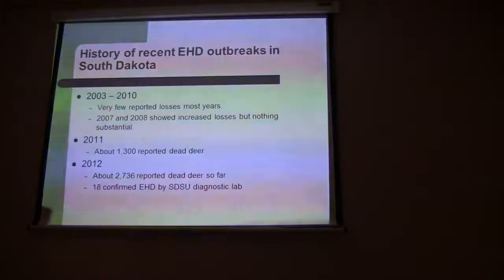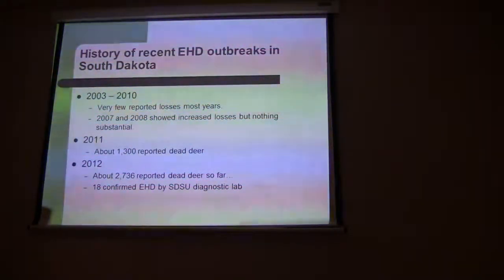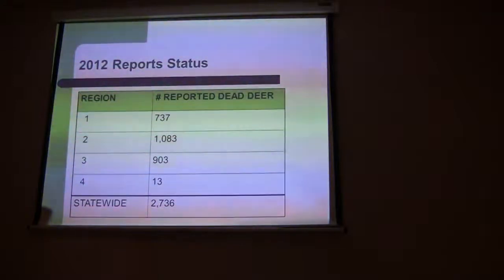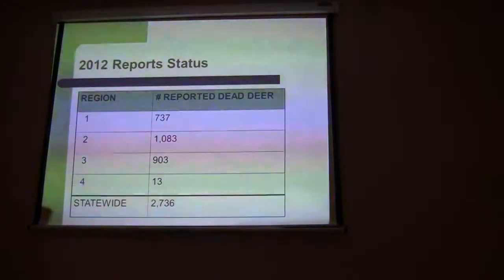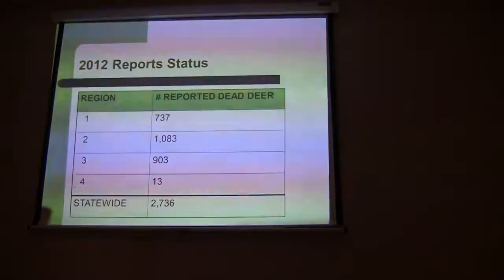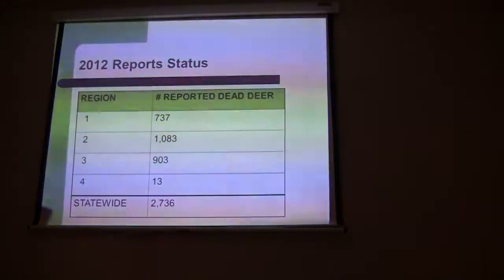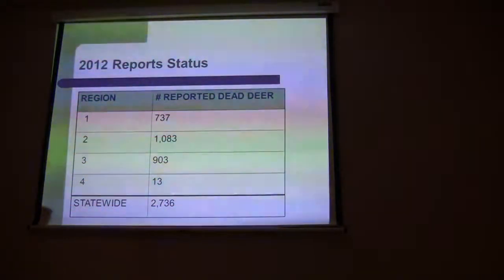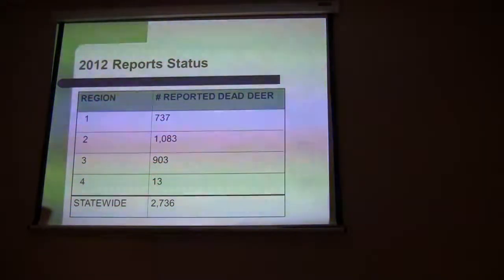This year, unfortunately, we're over double that already, so it is a concern to us. We're almost up to 2,800 reported dead deer, with confirmed EHD in 18 cases. As far as distribution of those reports: Region 1, the western part of the state, we're looking at a little over 700 reports. Region 2, in the central part, over 1,000. Region 3, in the southeast — something pretty new to South Dakota — we're darn near 1,000, which has obviously caused some concern. Region 4 doesn't historically see much and they've had very few.